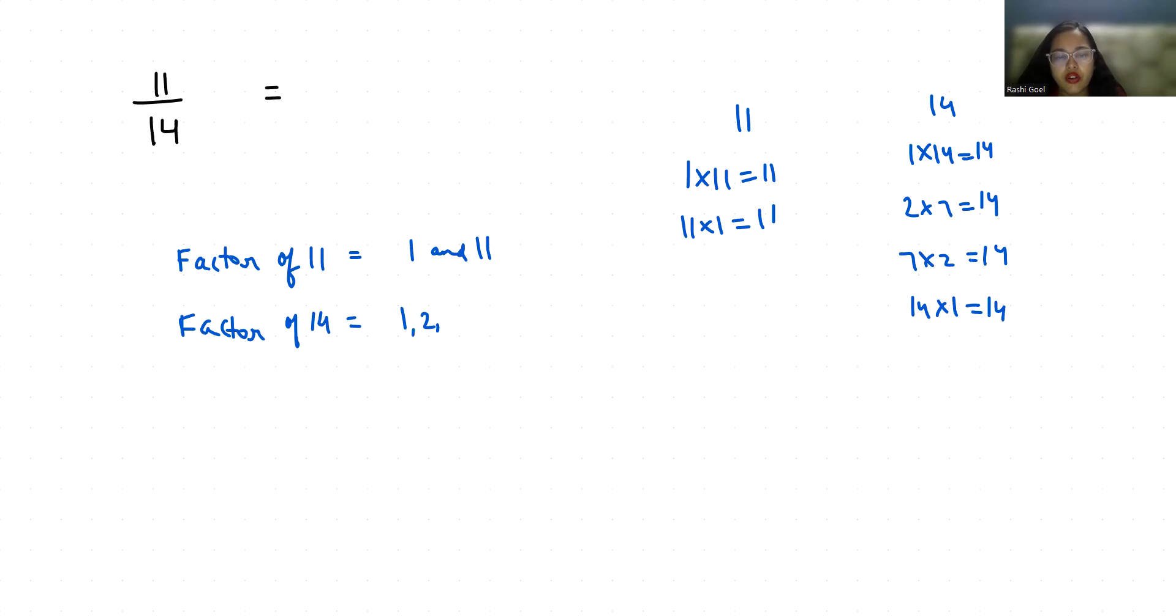So what are the common factors? 1. So highest common factor is also 1. So we will divide it by 1 in numerator as well as in denominator.